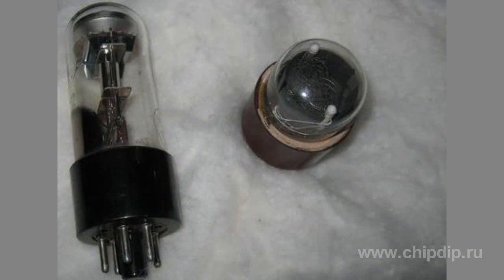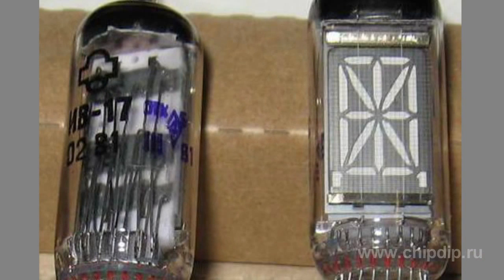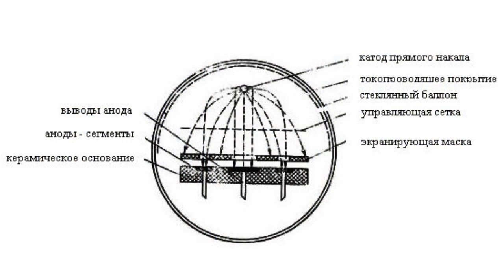Vacuum fluorescent displays are made in cylindrical and flat bulbs. The basis of a single-digit display is a glass or ceramic board. All other parts of the display are installed onto it. A conductive layer connected with the contacts is located in the sockets of the board, which are made in the form of sections. Each section has an individual lead.